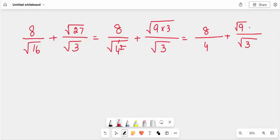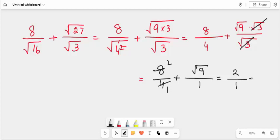3 in square root, this will cut off with this. We have 8 divided by 4 plus this one. Now for the simplify, for 1s are 4, for 2s are this, 2 by 1 plus 3.